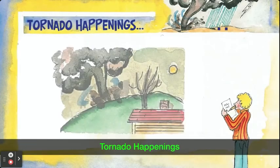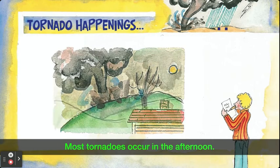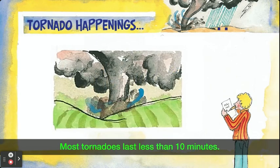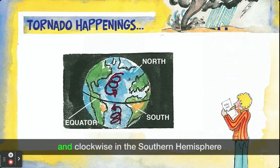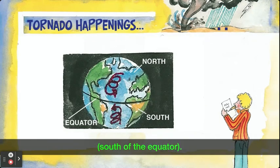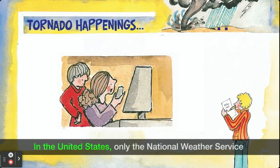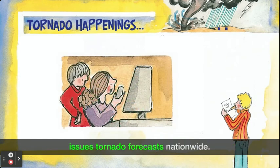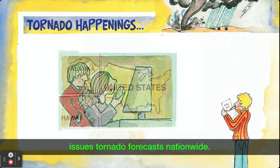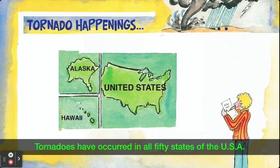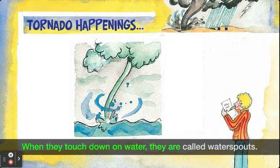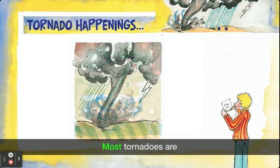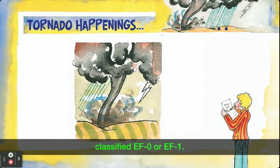Tornado happenings: Most tornadoes occur in the afternoon. Most tornadoes last less than 10 minutes. Most tornadoes rotate counterclockwise in the northern hemisphere, north of the equator, and clockwise in the southern hemisphere, south of the equator. In the United States, only the National Weather Service issues tornado forecasts nationwide. Tornadoes have occurred in all 50 states of the USA. Funnel clouds form over water too — when they touch down on water, they are called waterspouts. Most tornadoes are classified EF-0 or EF-1. EF-5 tornadoes are very rare.